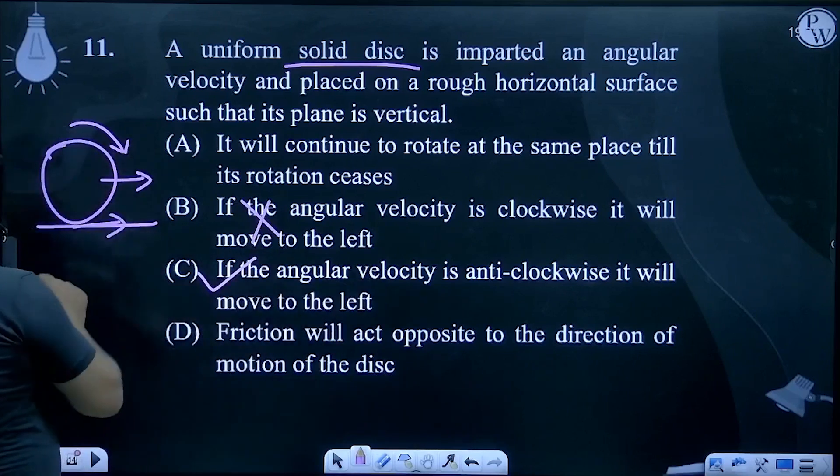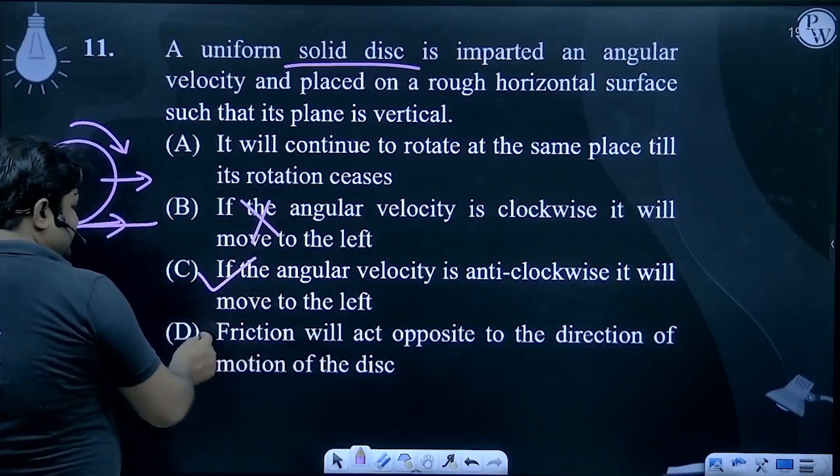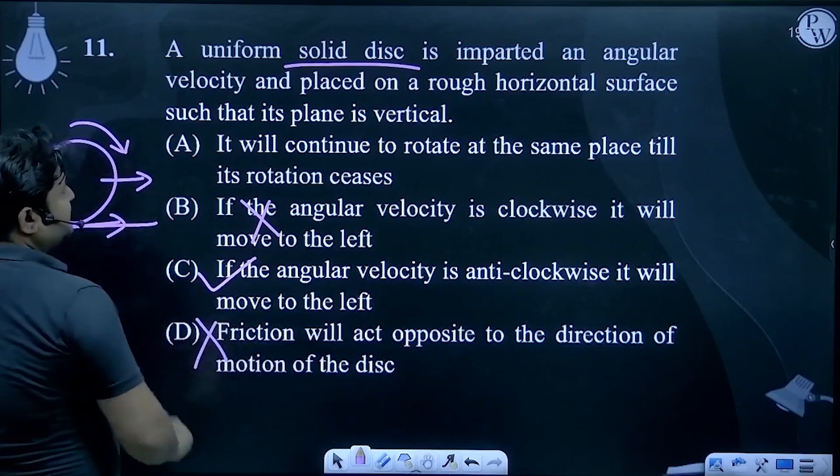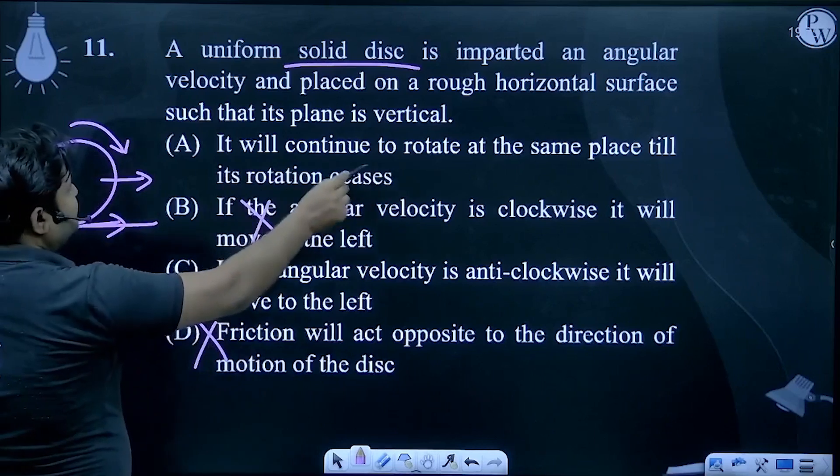Friction will move to the right side, same direction. So the opposite direction will be the right side. Oppose direction is the right side. It will continue to rotate at the same place.